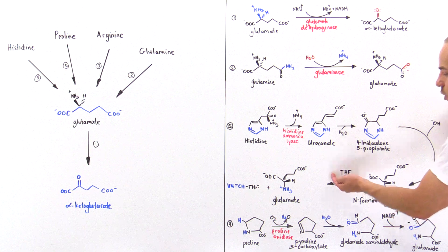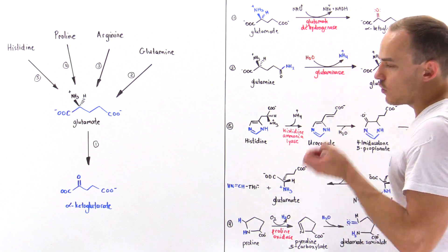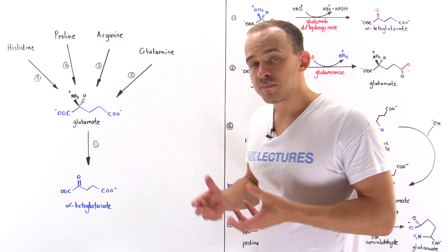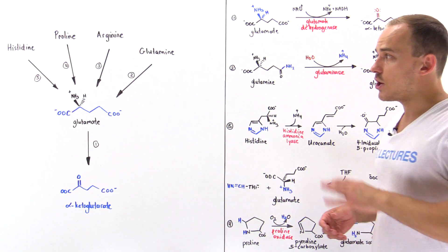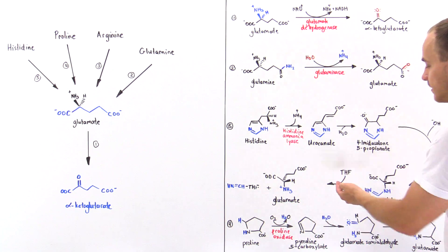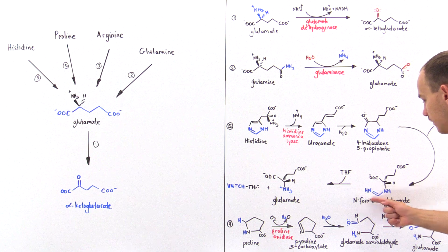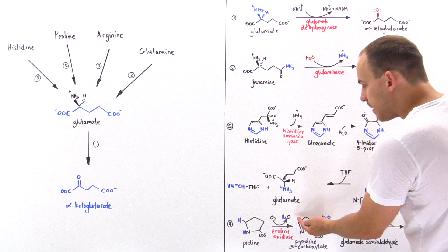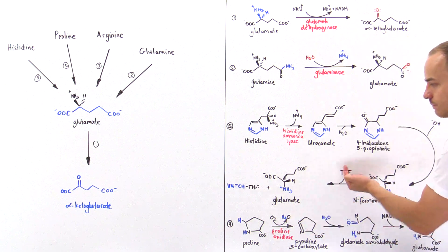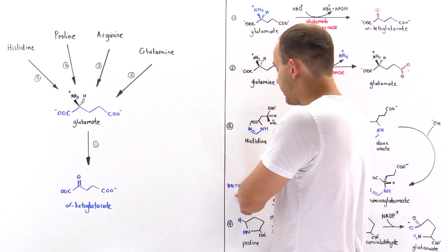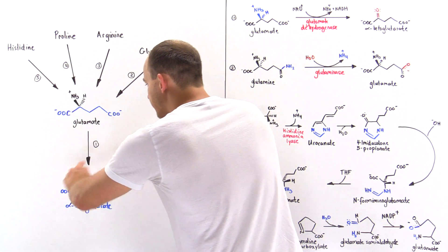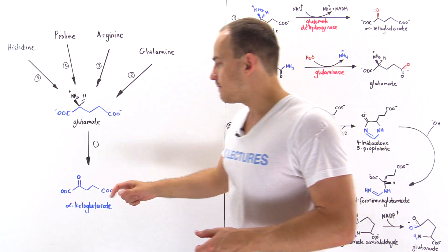In the final step, we have THF — tetrahydrofolate — which is the molecule in our body responsible for acting as a carrier for activated one-carbon molecules, which we'll discuss in a later lecture. The tetrahydrofolate acts to take off this entire group — the carbon along with this nitrogen. This nitrogen gains two more H ions, we form our glutamate, and the tetrahydrofolate abstracts this group forming this molecule. Once histidine is transformed into glutamate, we simply undergo the glutamate dehydrogenase step to form alpha-ketoglutarate.